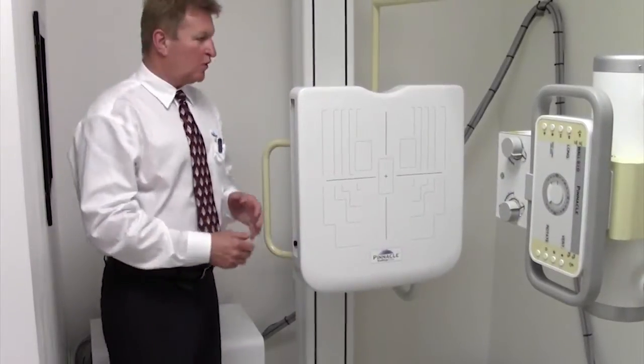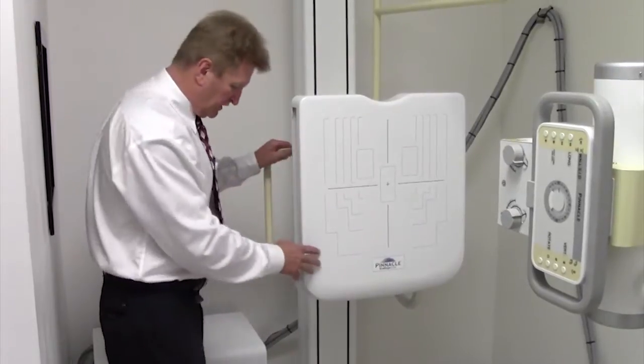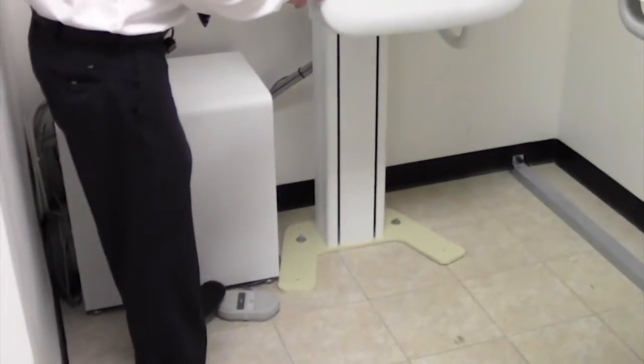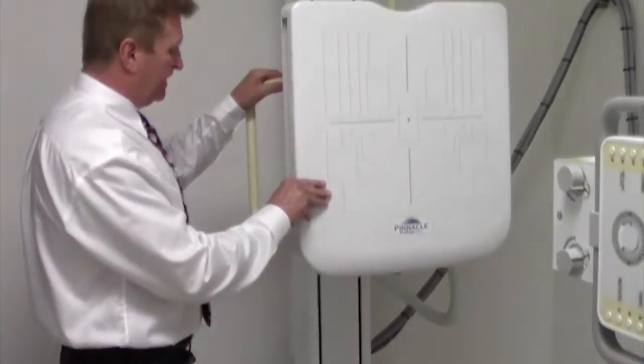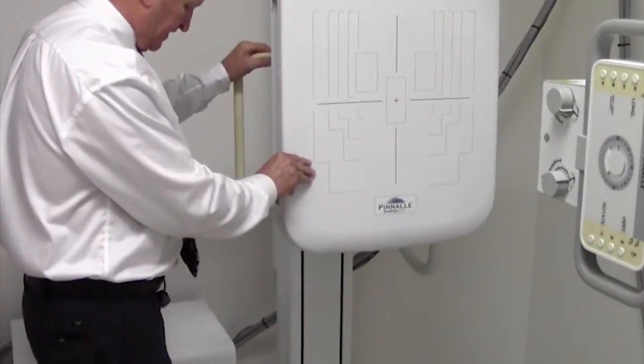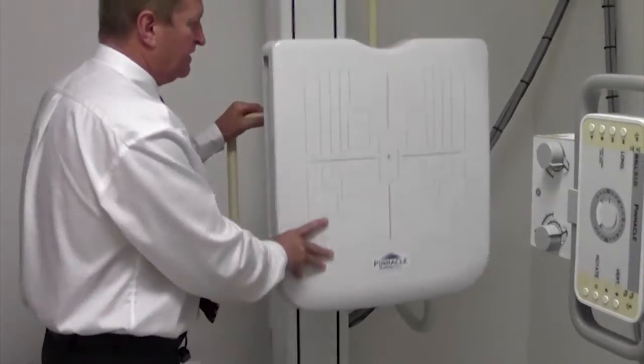To do extremities or anything tabletop, the activation foot switch is a double tap to move the wall stand. You can move it up or down and double tap to rotate the platform.